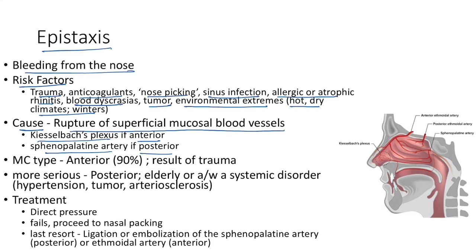The most common type is anterior epistaxis — 90% of cases — usually caused by trauma. Though anterior epistaxis is most common, the more serious type is posterior epistaxis, usually seen in elderly patients and associated with systemic disorders like hypertension, tumor, and arteriosclerosis.